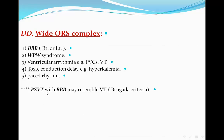Paroxysmal supraventricular tachycardia with bundle branch block can produce a wide complex tachycardia that may resemble VT. There are specific criteria to differentiate VT from PSVT with bundle branch block or aberrant conduction — these are known as the Brugada criteria, which you can review from any reference source.